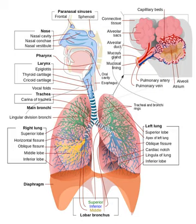The branching airways of the lower tract are often described as the respiratory tree or tracheobronchial tree. The intervals between successive branch points along the various branches of the tree are often referred to as branching generations, of which there are in the adult human about 23. The earlier generations, approximately generations 0 to 16, consisting of the trachea and the bronchi, as well as the larger bronchioles which simply act as air conduits, bringing air to the respiratory bronchioles, alveolar ducts and alveoli, approximately generations 17 to 23, where gas exchange takes place.